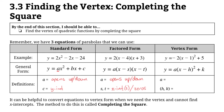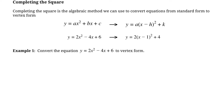Lastly we have vertex form, which is what we want to get to today. It's always in the form y equals a multiplied by (x minus h) all squared plus k. The value a tells you whether your parabola opens up or down, and the values h and k are the coordinates for your vertex. We'll be converting quadratic equations from standard form into vertex form so we can easily find our vertex.